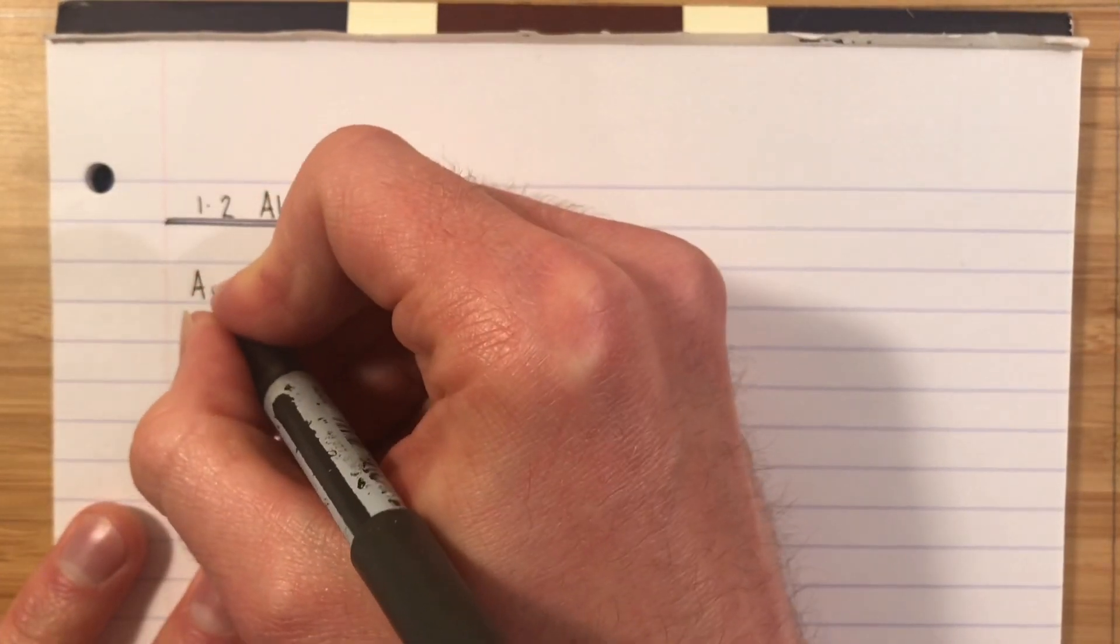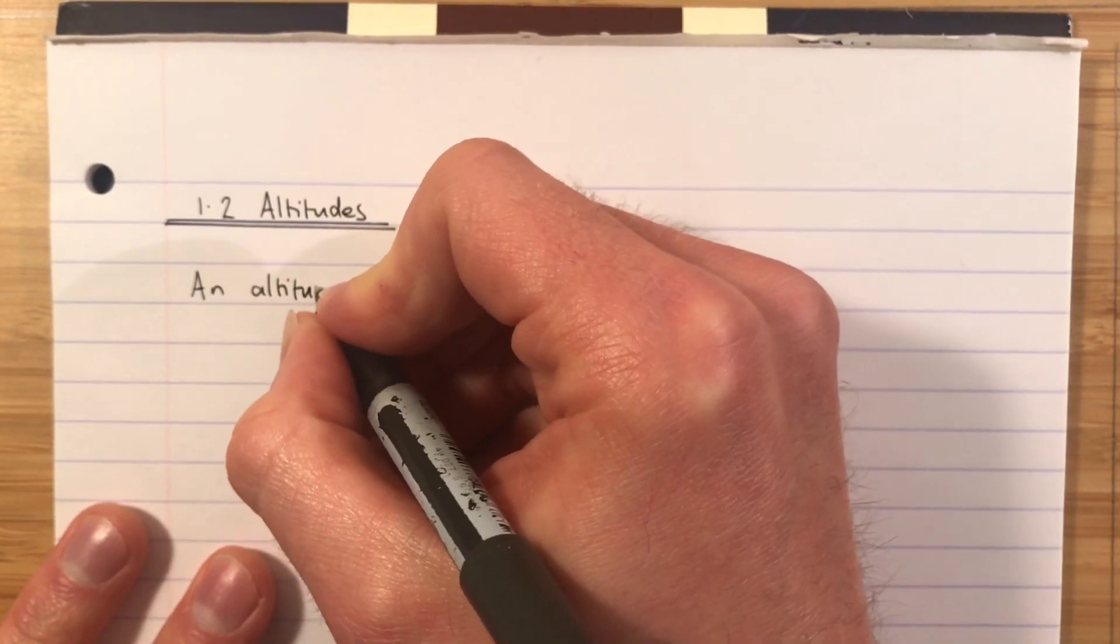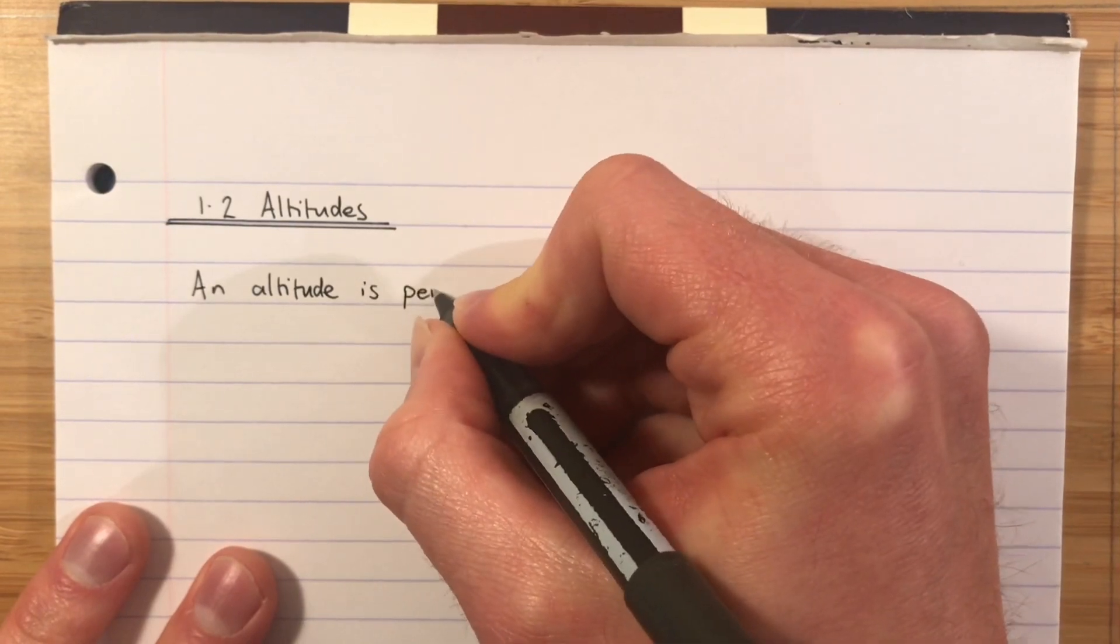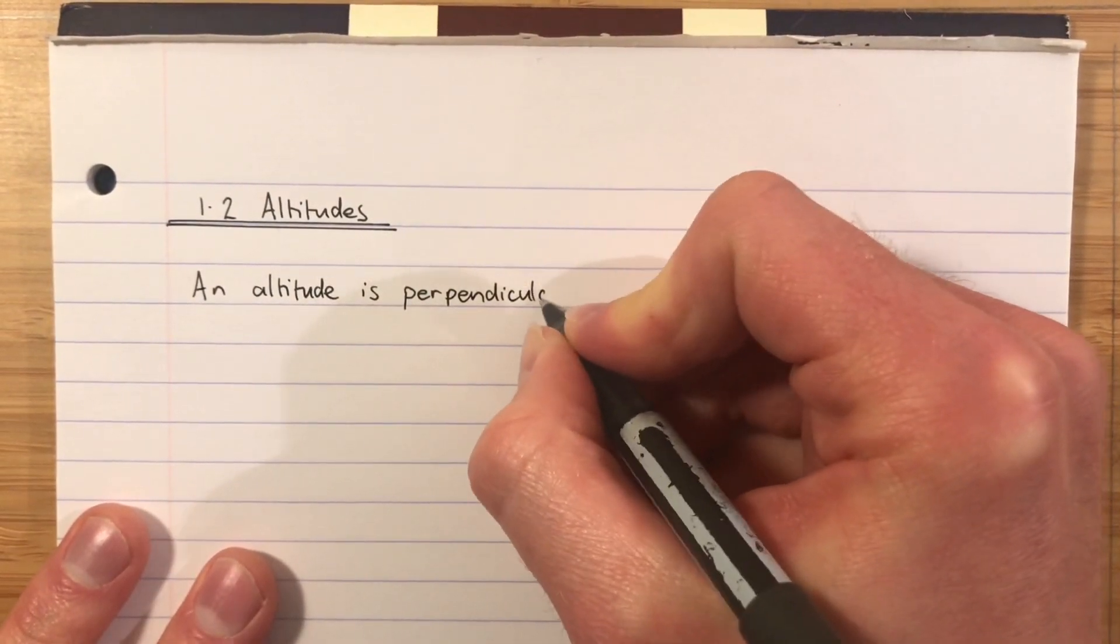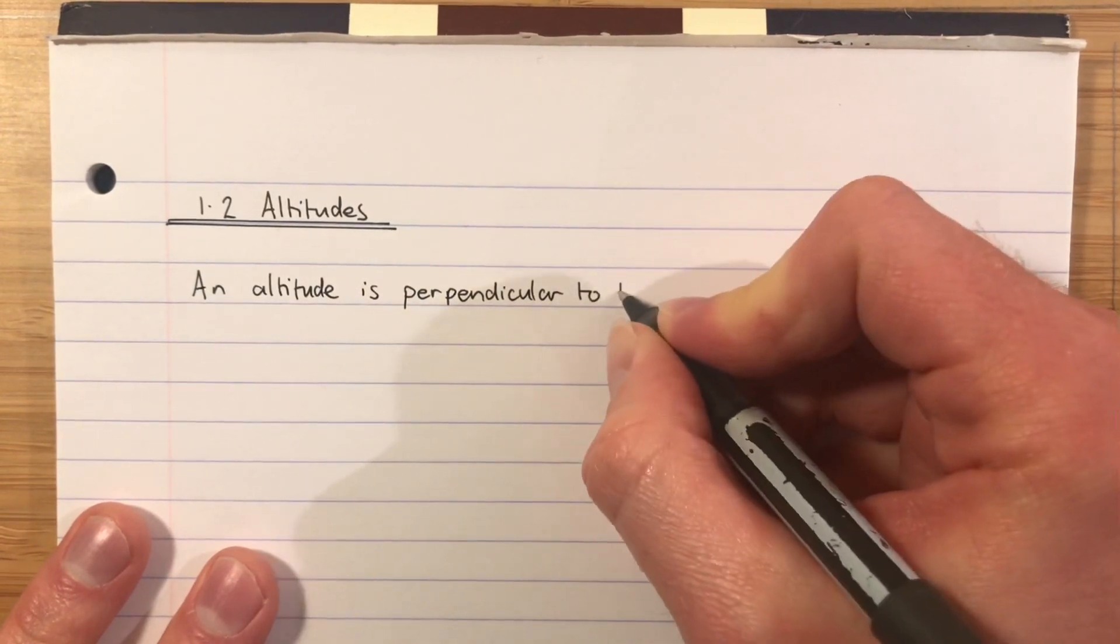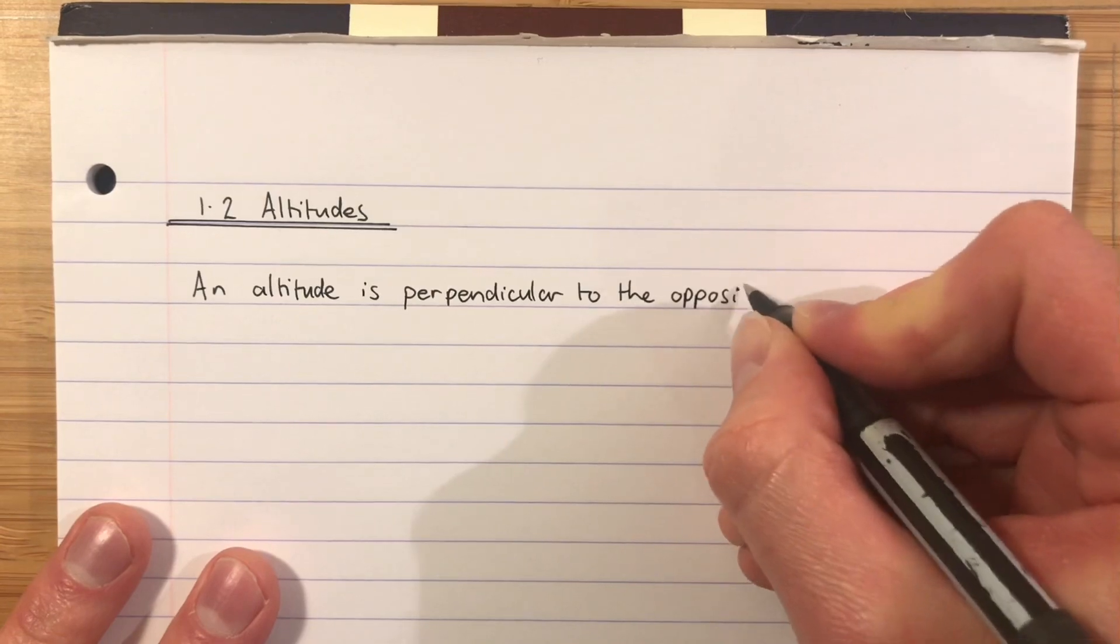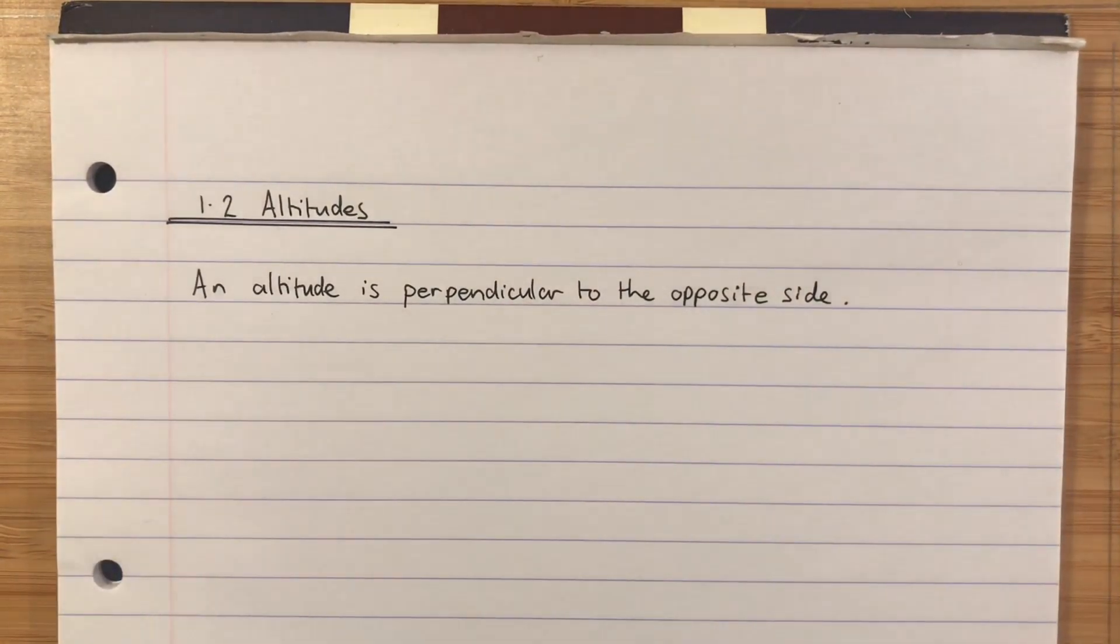We will say an altitude is perpendicular to the opposite side. And that's just what we've discussed.